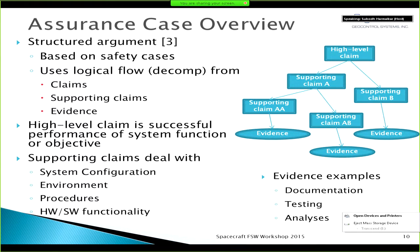Analysis of each critical event uses the well-known concept of assurance cases. An assurance case is a structured argument based on safety cases. It uses a logical decomposition from a high-level claim to supporting claims and eventually down to evidence. That high-level claim is typically the successful performance of a system function or mission objective. Supporting claims may relate to things like system configuration, environment, procedures, and software or hardware functionality. There may be multiple levels of supporting claims based on the complexity of the event or number of subsystems involved. The lowest level of the assurance case is the evidence that validates or invalidates the supporting claims — examples include documentation, testing, and analyses.